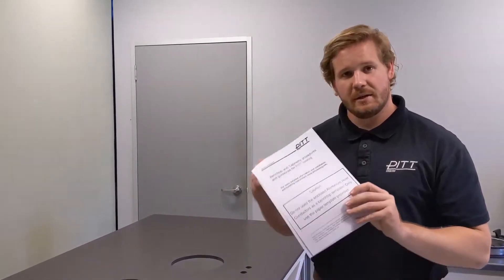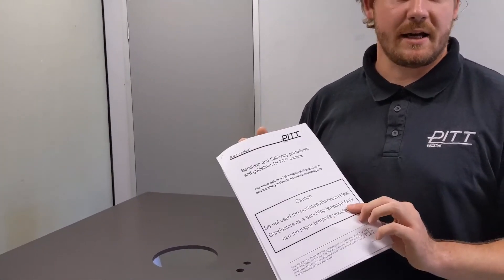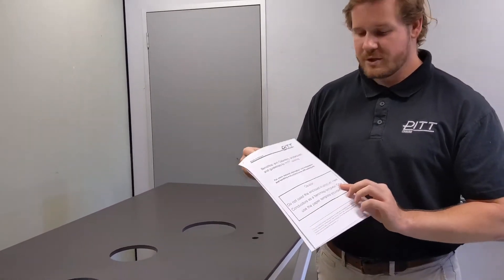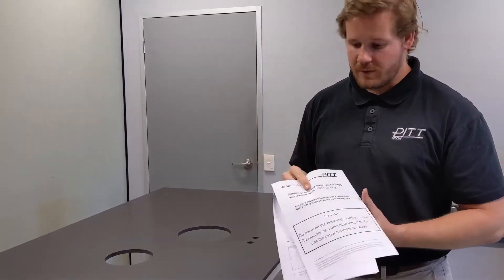First thing will be the benchtop and cabinetry guidelines. This is attached on the side of every pick cooktop box so we want to make sure that we review these.